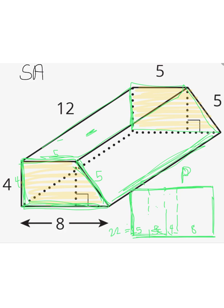The other dimension is 12, because the trapezoids are 12 units apart — that's the height of the prism. So to find the lateral area, I'm just going to multiply 22 times 12, which gives me 264 units squared.